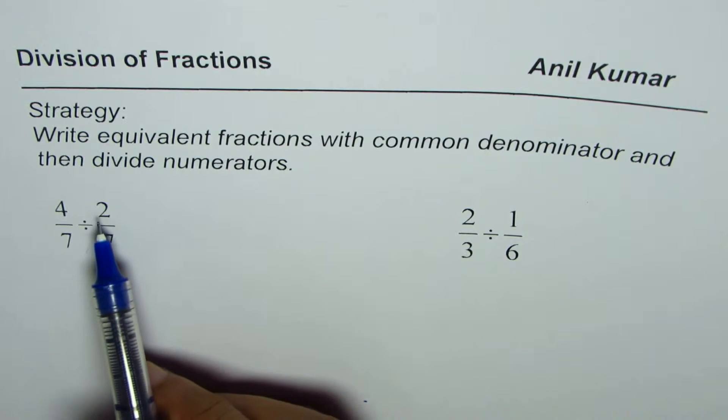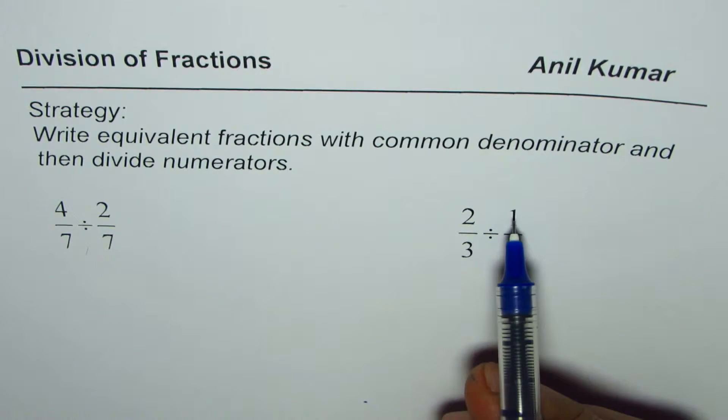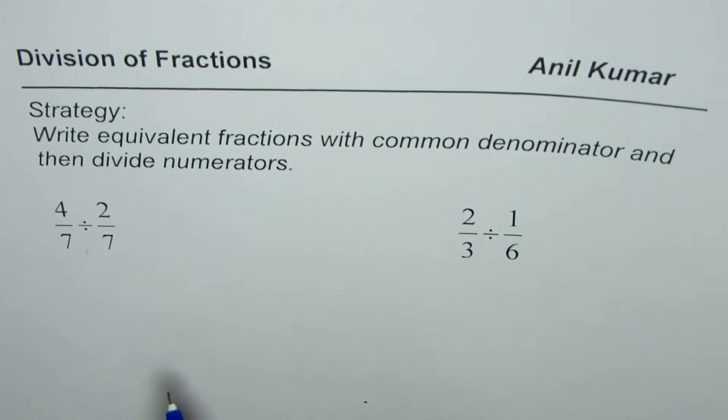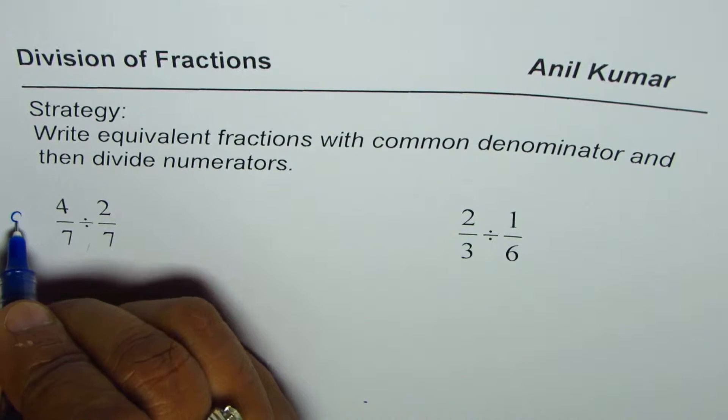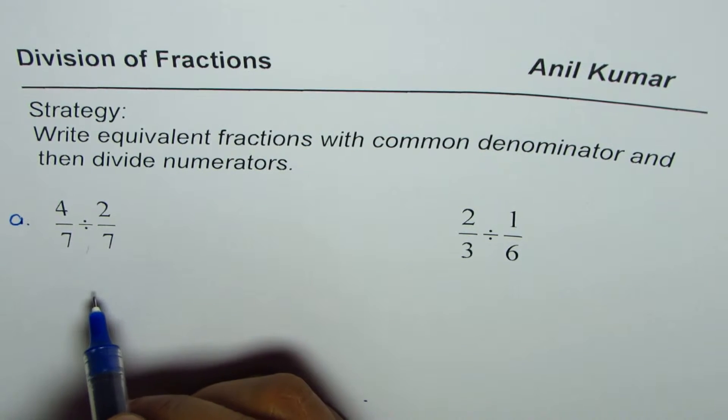We have two examples. The first one here is 4 over 7 divided by 2 over 7. The second one is 2 over 3 divided by 1 over 6. Now let's look into part a which is 4 over 7 divided by 2 over 7.